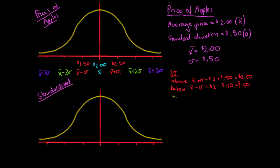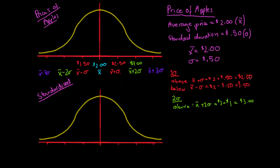Now two standard deviations away. Two standard deviations above: x-bar plus 2·sigma = $2.00 + 2×$0.50 = $2.00 + $1.00 = $3.00. Two standard deviations below: x-bar minus 2·sigma = $2.00 − $1.00 = $1.00. So we've got $3.00 above and $1.00 below the mean at two standard deviations.